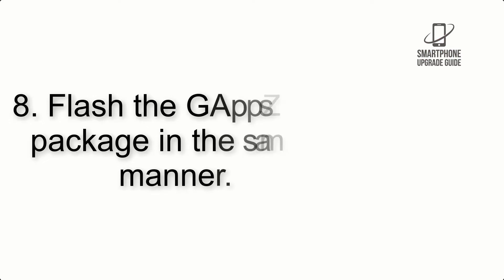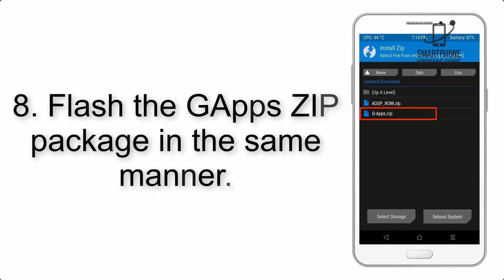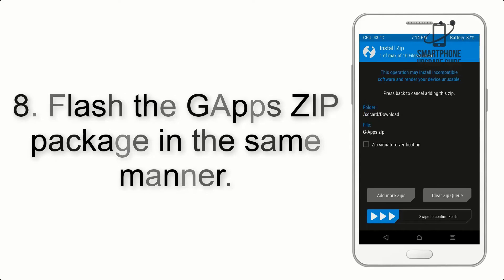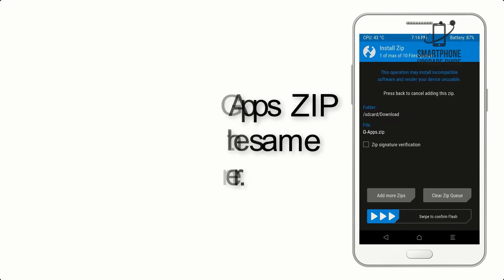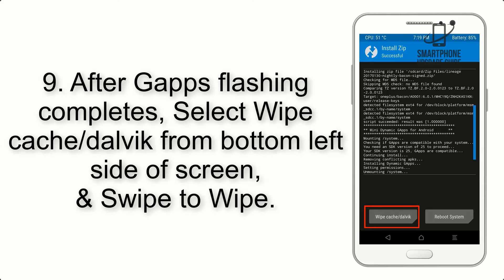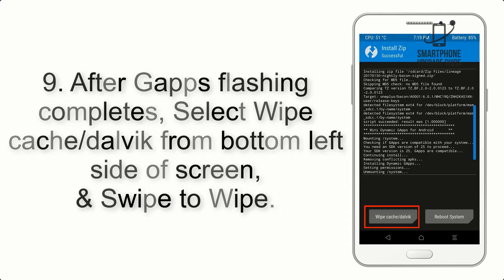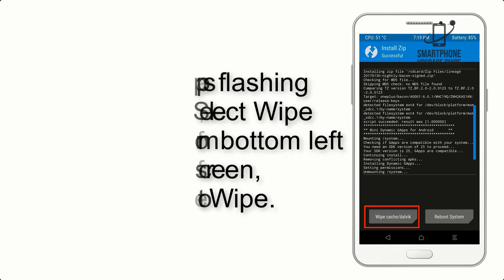Step 8: Flash the GApps ZIP package in the same manner. Step 9: After GApps flashing completes, select Wipe Cache and Dalvik from the bottom left side of the screen, and swipe to wipe.